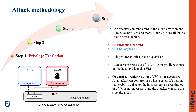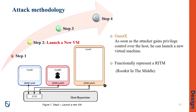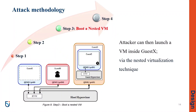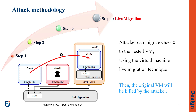What is the process of an attack? An attacker, like a normal customer, can rent a VM in a cloud environment. The attacker's VM and many other VMs are all on the same host machine. In the figure, guest M is the VM owned by the attacker, and guest 0 is the target VM. The attacker can take advantage of existing vulnerabilities in a hypervisor to break out of its VM and gain privileged control on the host. The attacker gains privileged control over the host and can launch a new virtual machine — guest X — which is a rootkit in the middle. Then, the attacker can launch a VM inside guest X, and finally, migrate to guest X using nested virtualization techniques and kill the original VM.